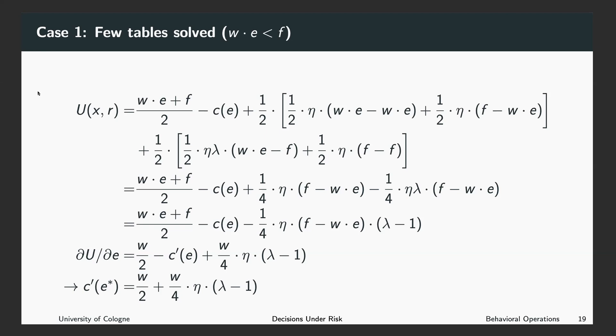I know this slide is very full of formulas, but we will go through it step by step. Let us first start in the first line. We will look at the utility of a loss averse subject and we want to derive the optimal effort level, the optimal number of tables solved.